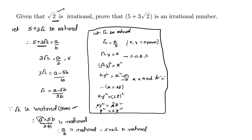So y² is equal to 2z², which means y is a multiple of 2. So here both x and y are multiples of 2, which contradicts the fact that they are co-primes. Therefore our assumption is wrong — root 2 is irrational. For 5-mark questions, you need to do both proofs.